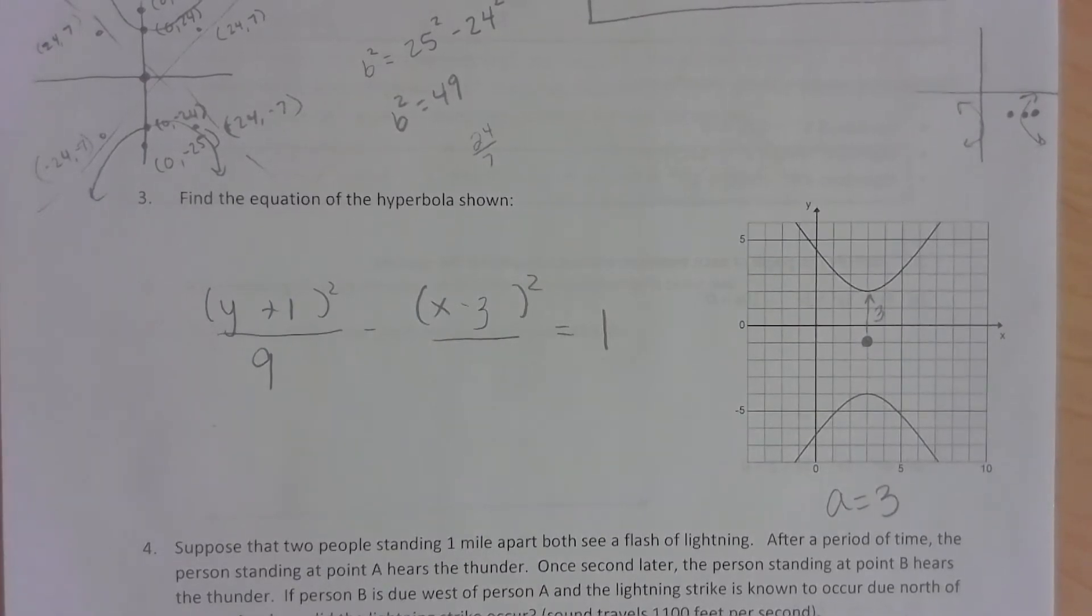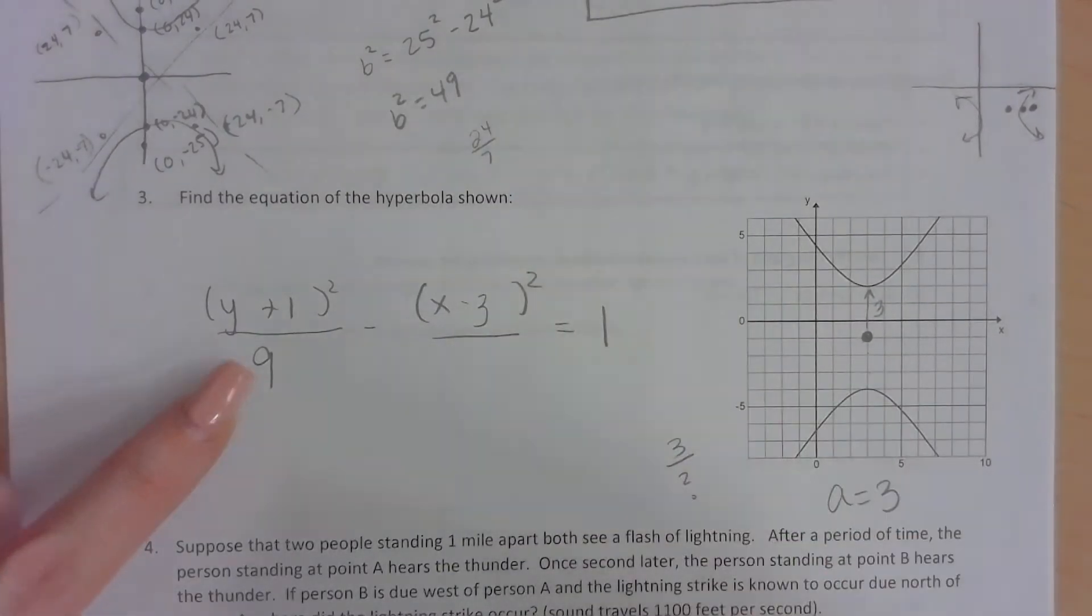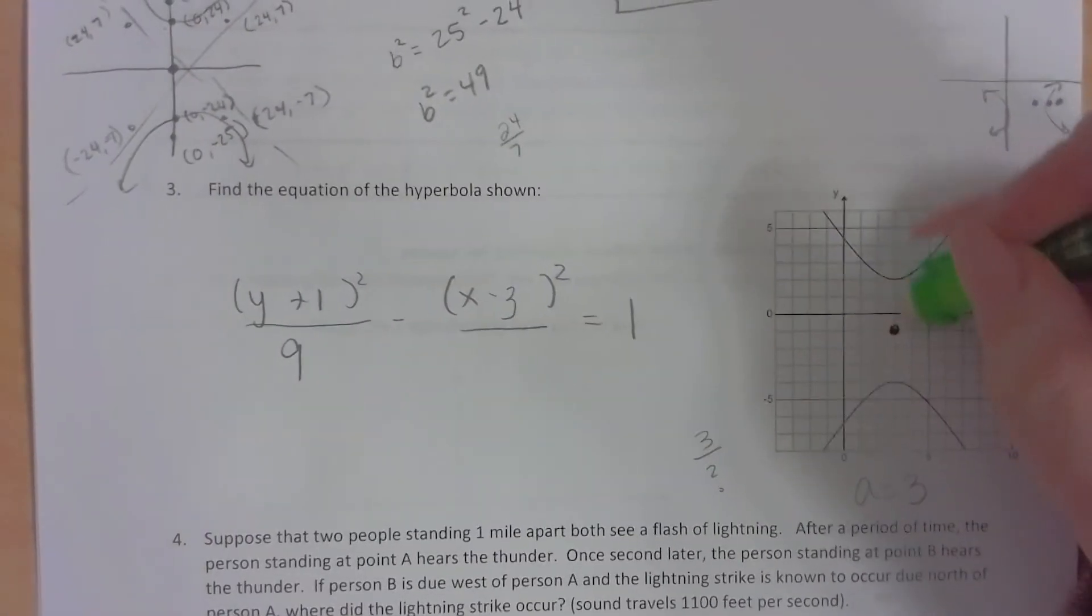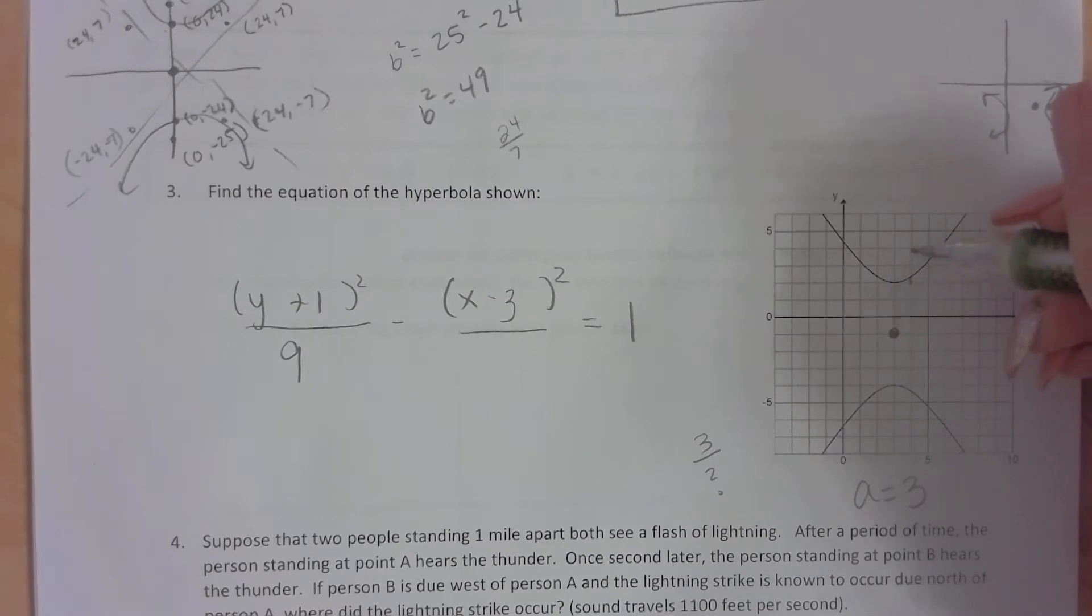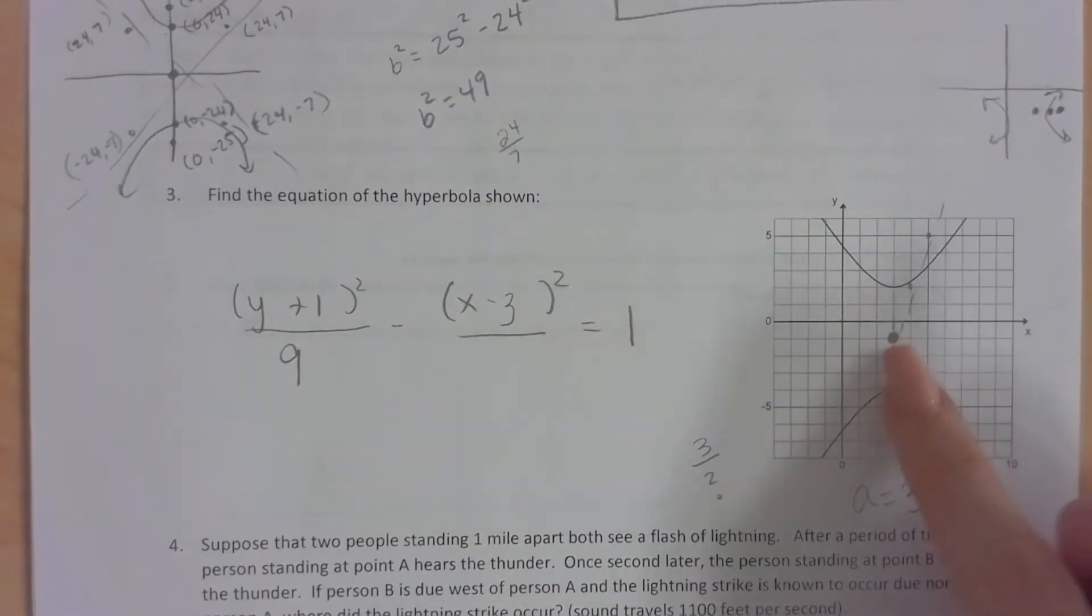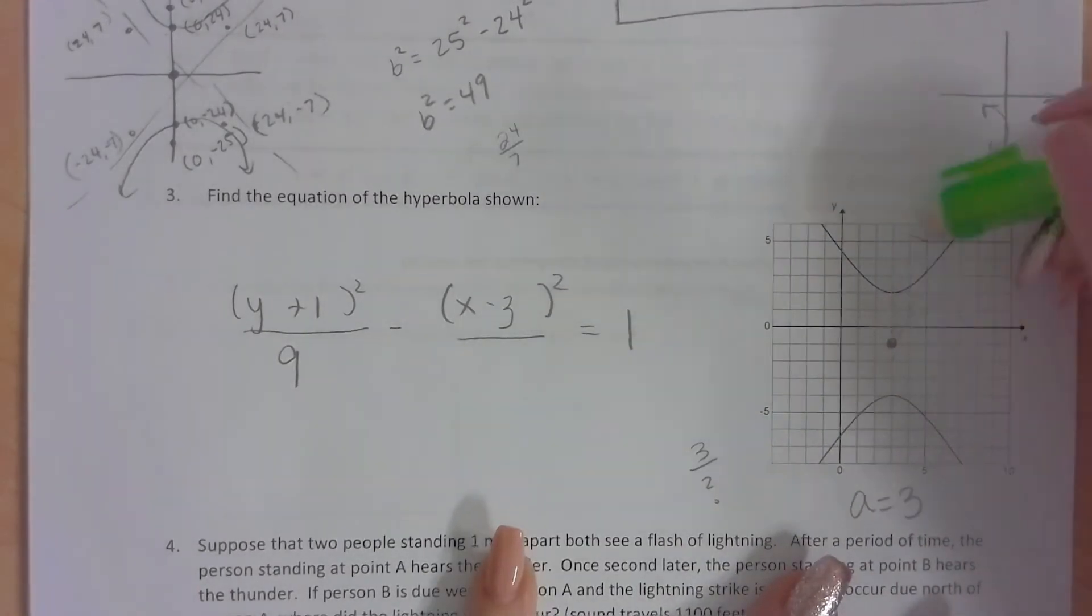Now to find b, we don't know anything about the focus, so I can't use our equation like we did in the last problem to figure out b. So we do know, though, that a is 3, and our slope is always y over x. So we know our slope is going to be 3 over something. So let's just kind of play around with some numbers. So if I went up 3 over 1, that's not going to work. That cuts into the hyperbola.